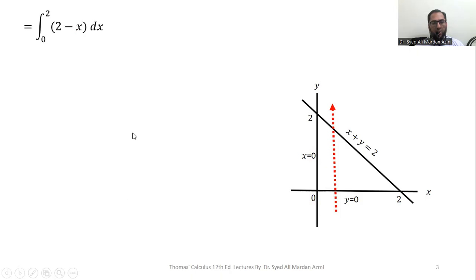In the next step we will integrate 2 minus x with respect to x. Integration of 2 is 2x and integration of x is x squared over 2, with the limits 0 to 2. In the next step we will apply fundamental theorem of calculus, upper limit minus lower limit. For upper limit we will replace x with 2, and for lower limit we will replace x with 0. After simplification we will get our result equal to 2.